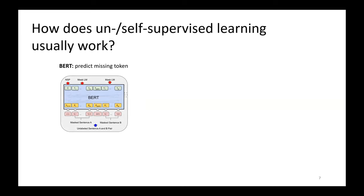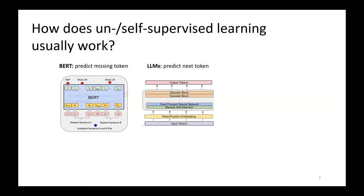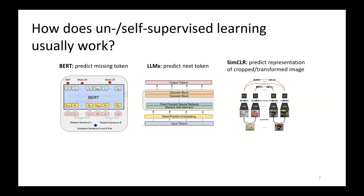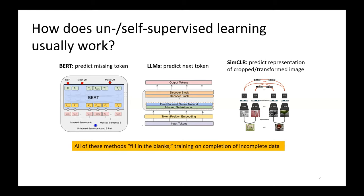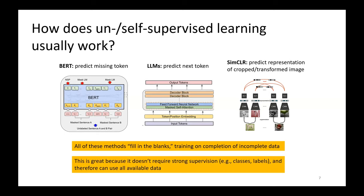Here are a few examples. BERT predicts missing tokens — you take some sentence, mask out some tokens, and predict them. Language models predict the next token — very similar principle. Self-supervised learning methods in vision, like SimCLR, transform the image in some way and predict representations of the cropped or transformed image. In all these cases, we're predicting some kind of missing piece of the data — all these methods essentially fill in the blanks. They're training on completion of incomplete data. By figuring out the right bit to hold out and complete, they can acquire a fairly general understanding of what's going on in that data. This is great because it doesn't require very strong supervision — it doesn't require ground truth class labels or even a notion of classes.